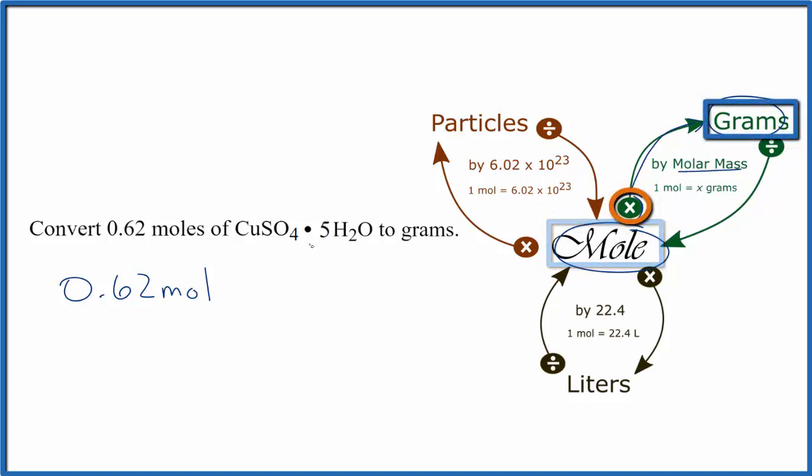We find the molar mass by adding up the masses of all of the atoms here. This is a little bit more complicated because we have this .5H2O. So to find the molar mass, we find the molar mass for copper sulfate, and then we have five water molecules. So we find the molar mass for the water molecule and multiply it by five.